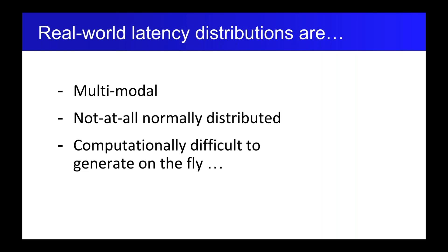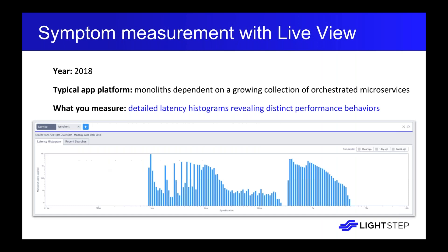These latency distributions are often not shown because they're computationally much more difficult to generate than a percentile. You can generate a percentile by sampling the data, but to show the complete latency distribution you need to see all of your data. Here's an example of what it looks like to measure performance with LightStep's live view — having the complete unsampled latency distribution allows you to identify distinctly different performance behaviors.